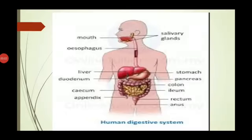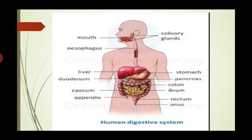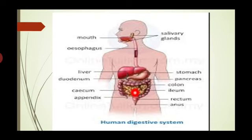Absorption is the process where the simplest molecules resulting from chemical digestion pass through the cell membrane lining of the small intestine by diffusion. Proteins, carbohydrates and lipids, after digestion, circulate through blood and lymph capillaries — this is the absorption process. Elimination is the expulsion of undigested waste through the anus in the form of feces.